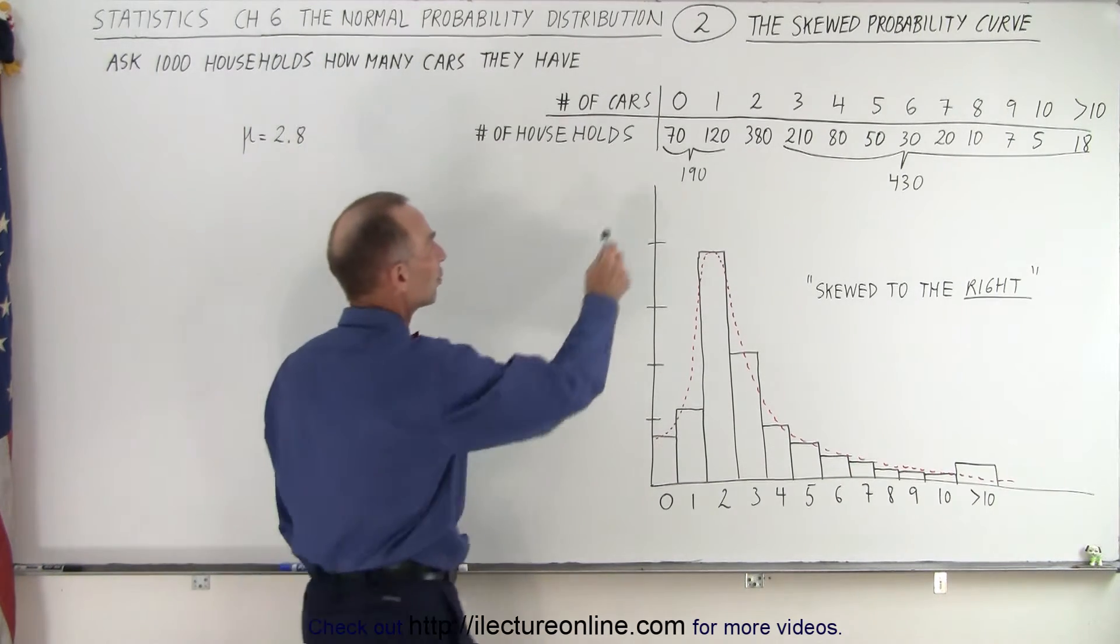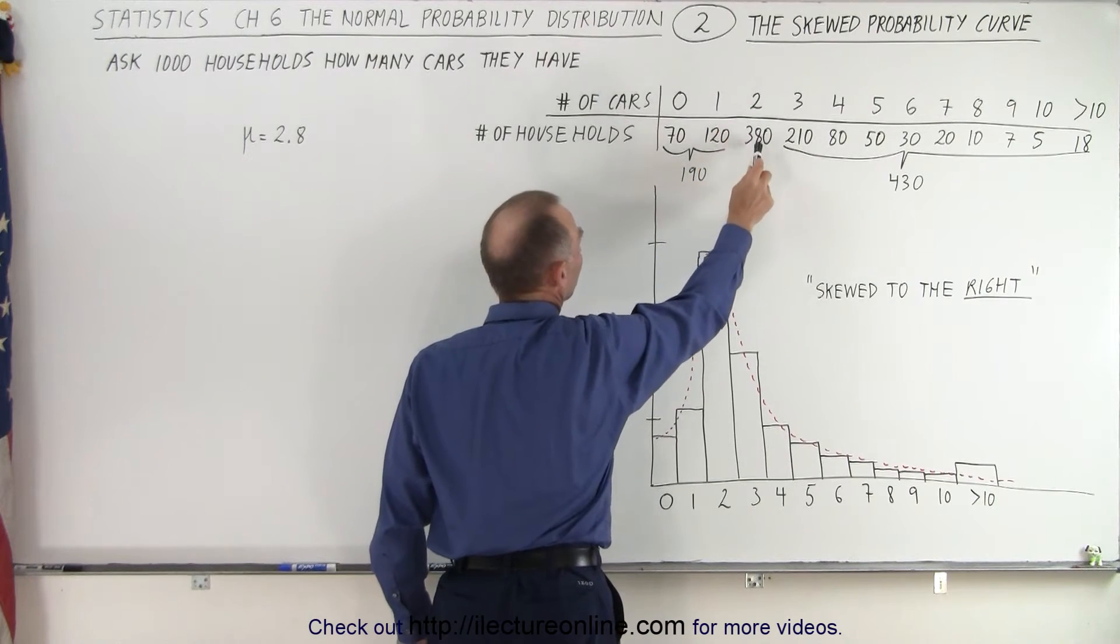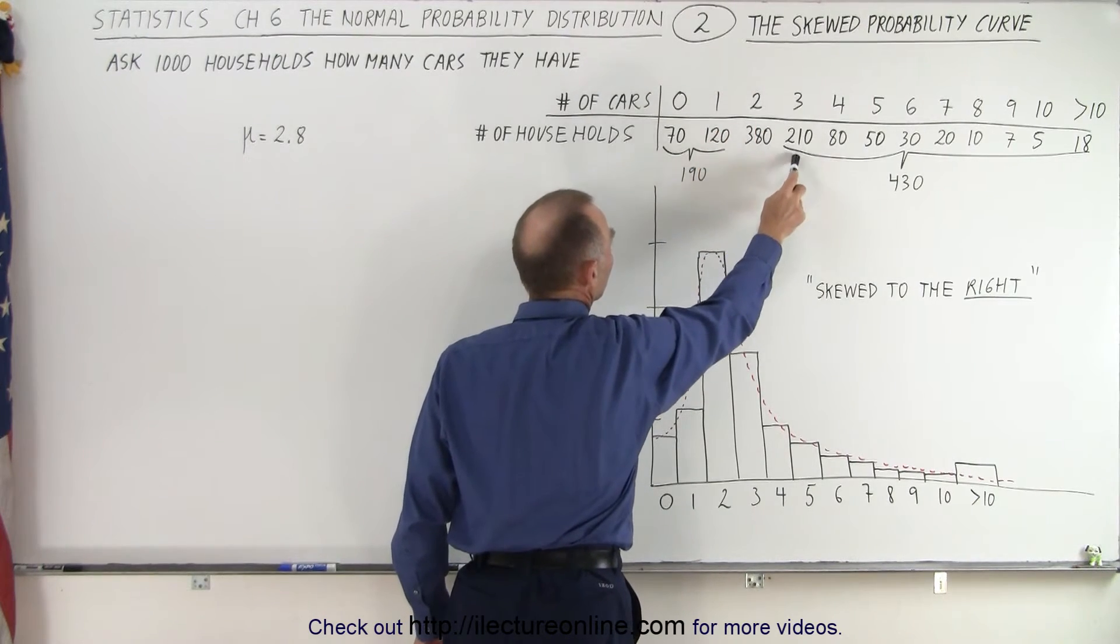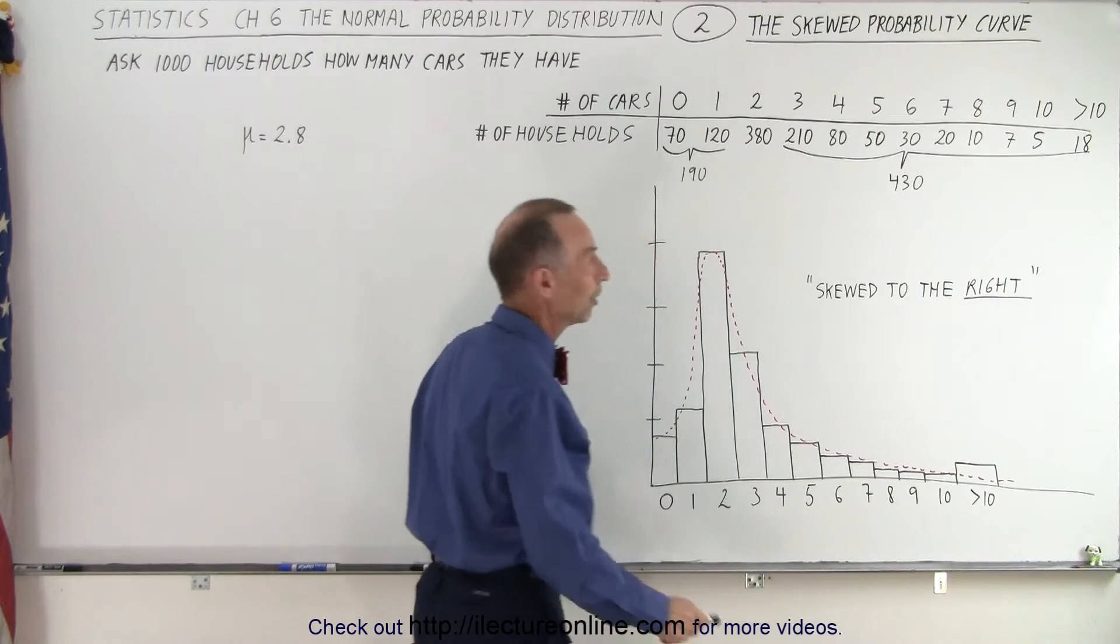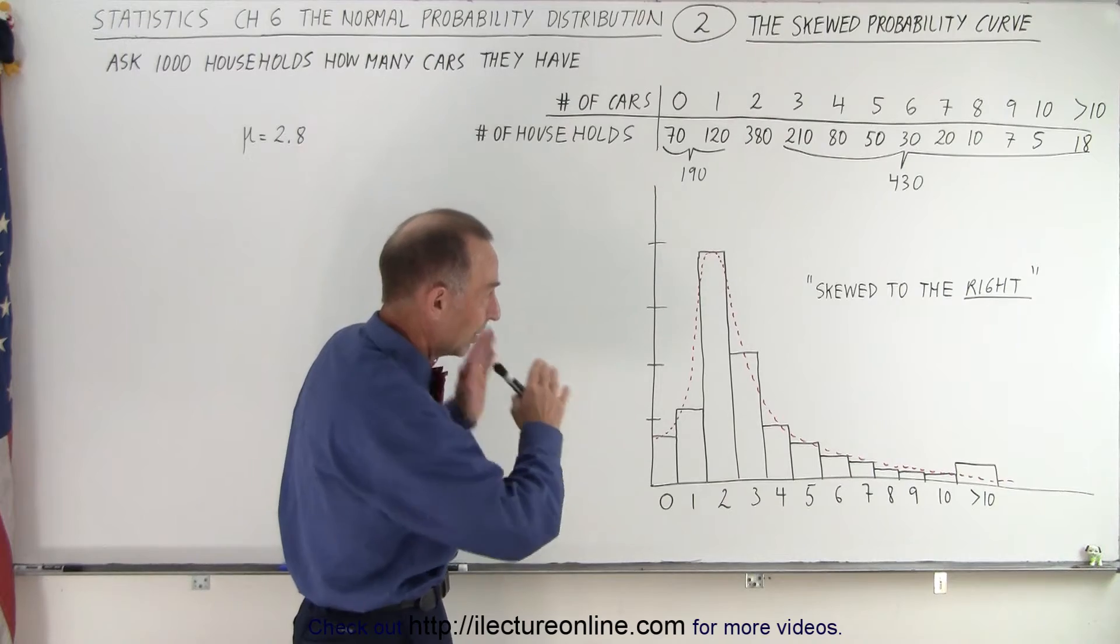And notice that 70 responded they have no cars. 120 said they had one car. 380 said they had two cars. 210 said they had three cars, and so forth. So you see there's some families that have a lot of cars, not a lot of the 1,000, but they're there.